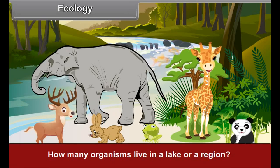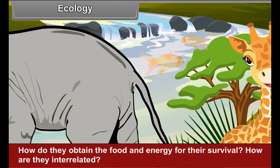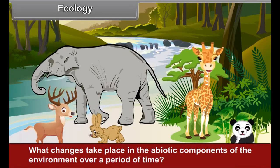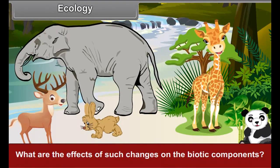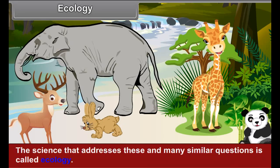Ecology: How many organisms live in a lake or a region? How do they obtain food and energy for their survival? How are they interrelated? What changes take place in the abiotic components of the environment over a period of time? What are the effects of such changes on the biotic components? The science that addresses these and many similar questions is called ecology.